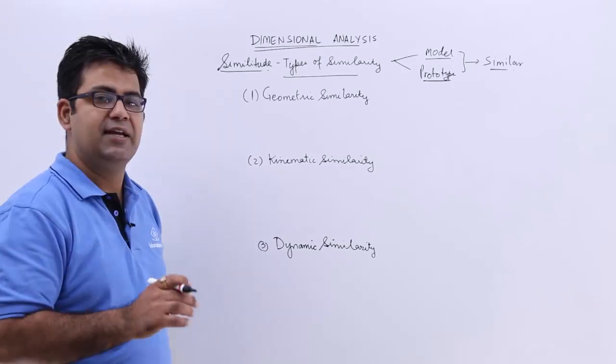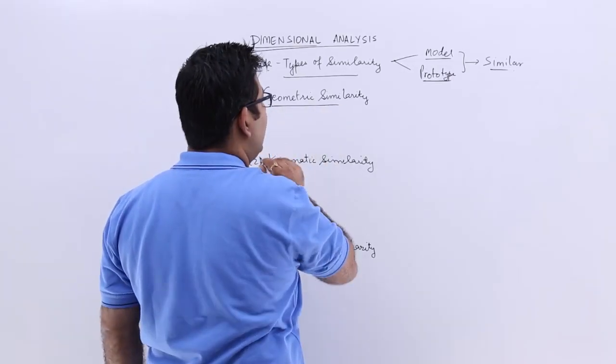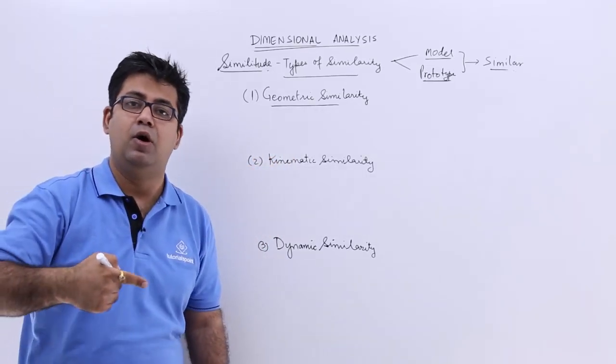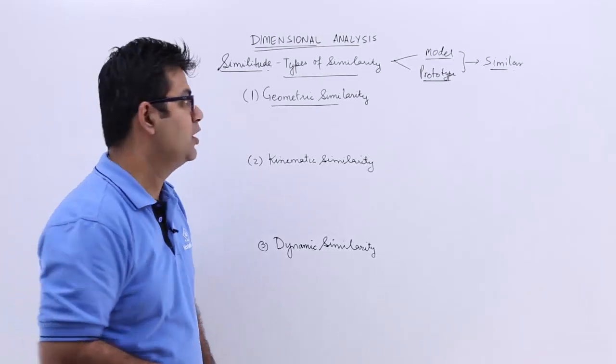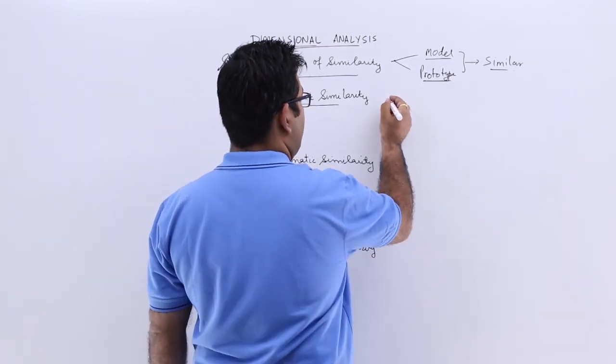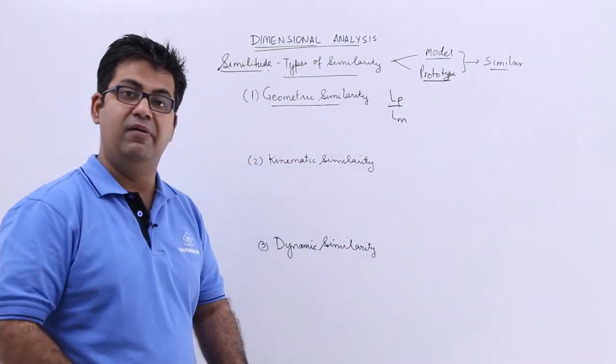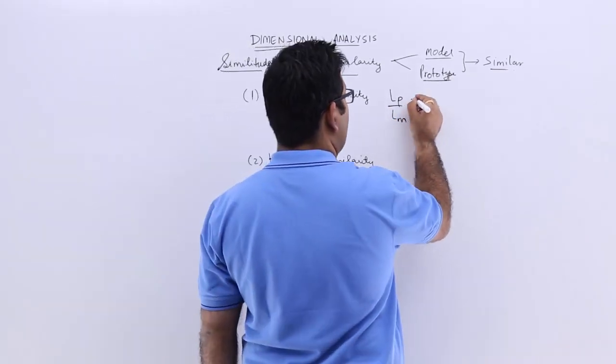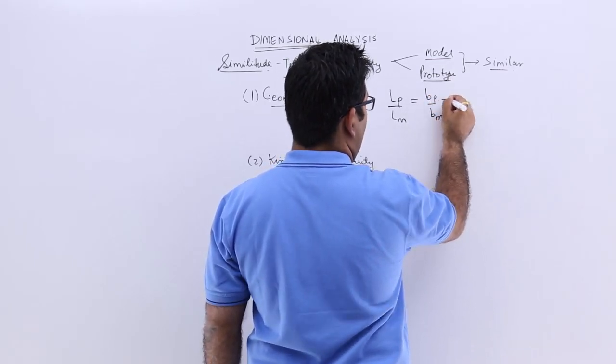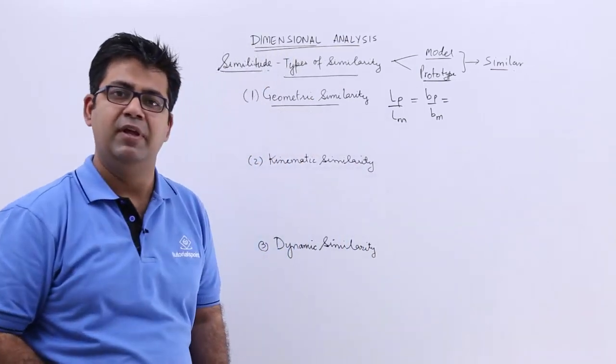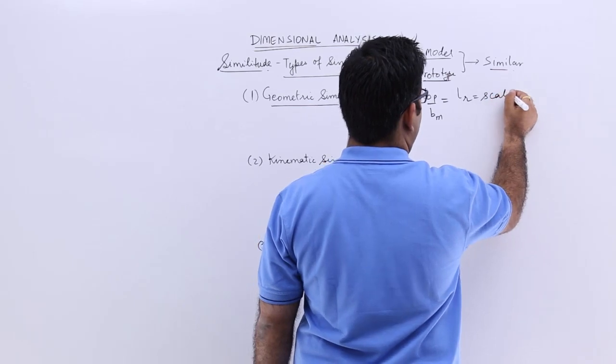What is geometric similarity? The geometric similarity means that the corresponding linear dimensions on proto and the model are in the same ratio. So if I take length, the length of the prototype upon the length of the model will be equal to the width of the prototype upon the width of the model. These two ratios are the same, which is called the scale ratio, which is LR.